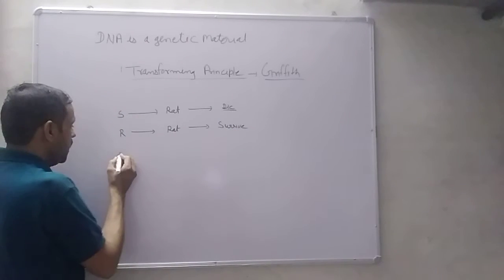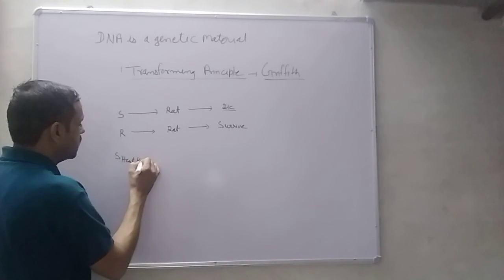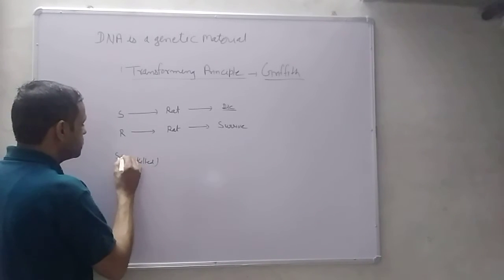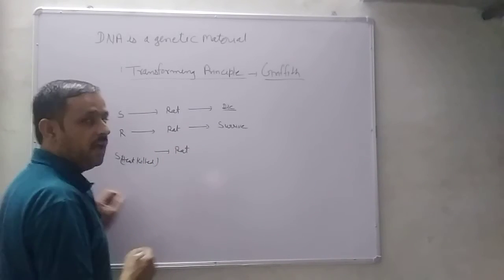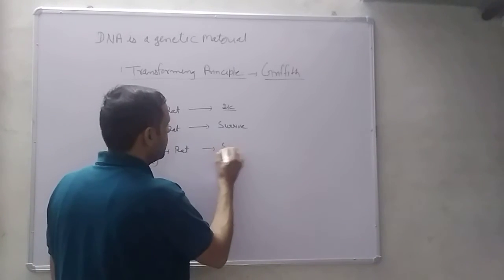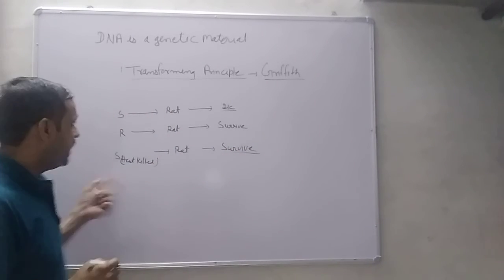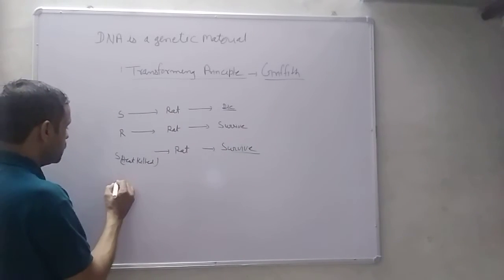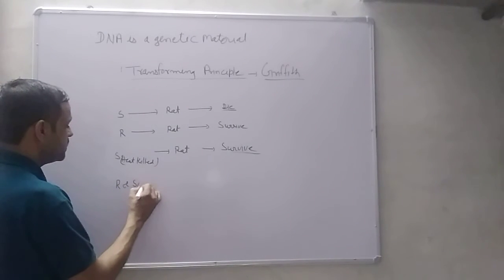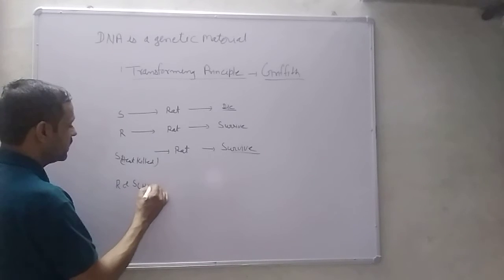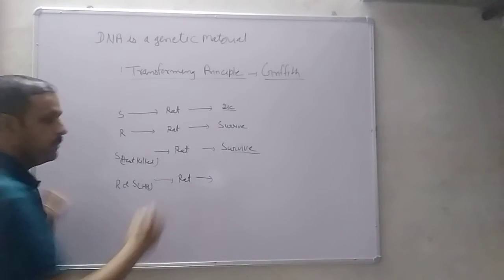Next time he used heat killed S bacteria and injected them into rats - then rats survived. In the next experiment he used both R bacteria and heat killed S bacteria and injected them into the rat.